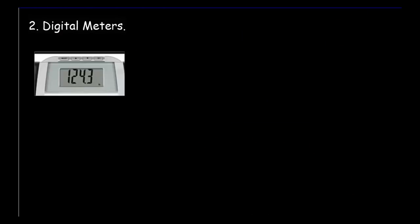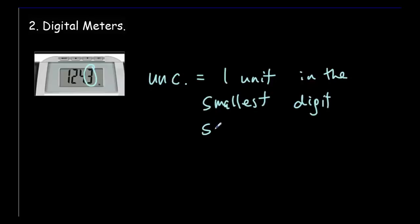Our second rule is for digital meters. But once again, use your gumption. If you see that smallest digit fluctuating at all, you should use the size of the fluctuations to estimate your uncertainty. If it's not fluctuating, then generally you can say that the uncertainty will equal one unit in the smallest digit shown on the meter. So in this example, the smallest digit is one decimal place. So our uncertainty would be plus or minus a one in the first decimal place, or plus or minus 0.1.